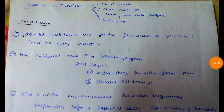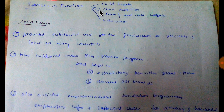We know that UNICEF's formation is for rehabilitation of the child, so all services and functions will be directly or indirectly related to child welfare. In services and functions, there are 4 points: child health, child nutrition, family and child welfare, and education.